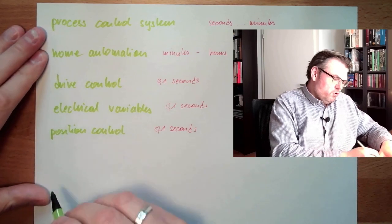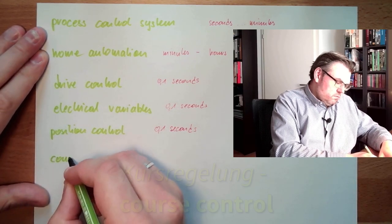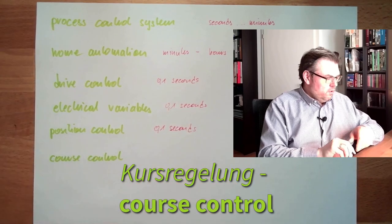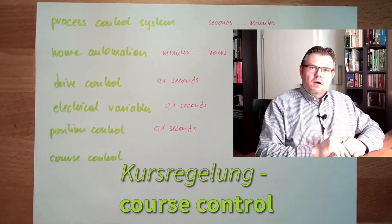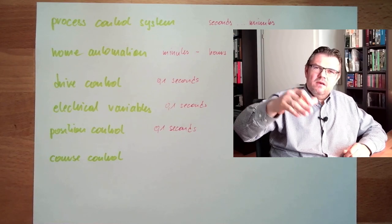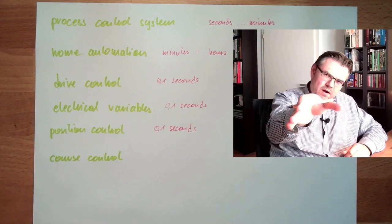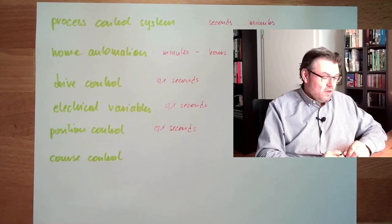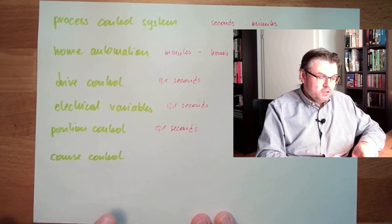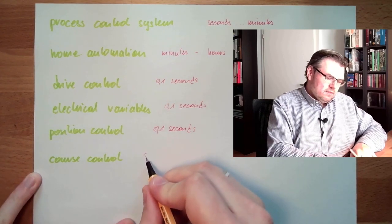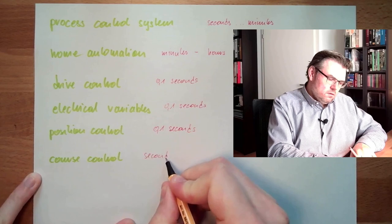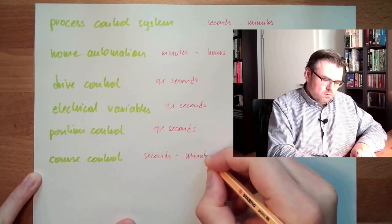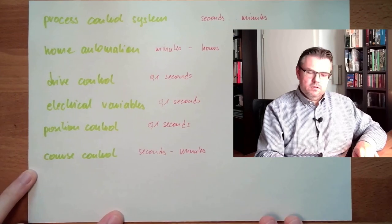We also have course control. We want to keep our planes flying from A to B — we need to keep a certain path, a certain course. Ships and vessels also need course control. Here we are in a wide range: in a plane we have to react in seconds, while on a ship it might be okay to react in minutes.